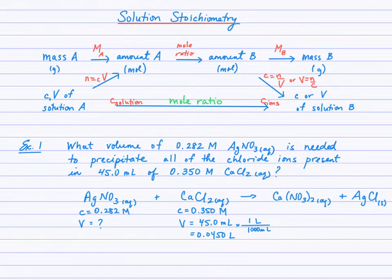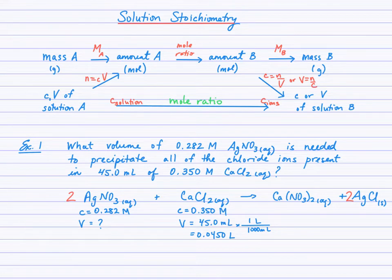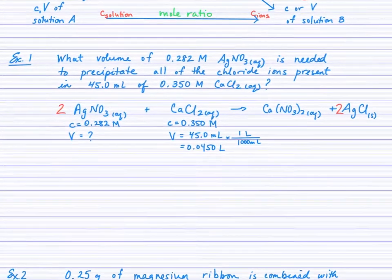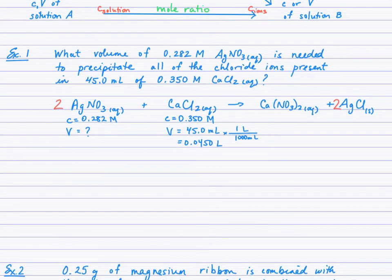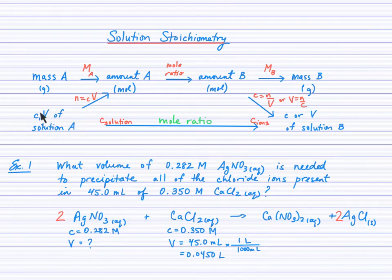I wrote out the silver nitrate and calcium chloride reaction producing calcium nitrate and silver chloride, and I need coefficients of 2 in two places to balance it. I listed the concentration of silver nitrate, its volume as unknown, and the concentration and volume of calcium chloride — both provided. I converted the volume from milliliters to liters, anticipating using the amount concentration formula where volume must be in liters. The pathway: we've been given concentration and volume of calcium chloride, so we find moles of CaCl₂, use the mole ratio to find moles of AgNO₃, then V equals N over C to find the volume of silver nitrate. Three steps are required.